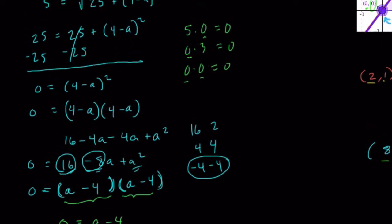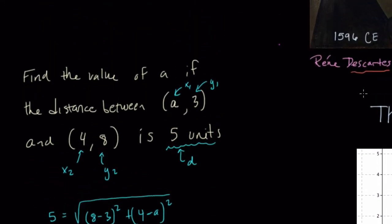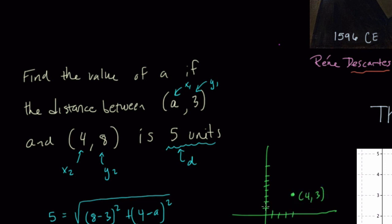That was pretty tough — it involves quadratics, FOIL, and factoring, some stuff you might not have even seen before. But that tells us this point is (4, 3). If you think about the graph, (4, 3) and (4, 8) are directly above each other, and the distance straight up and down is 5. So that's pretty much as tough as it can get with the distance formula. If you can handle this one, you're really on the right track. Thanks.